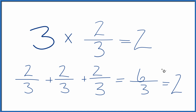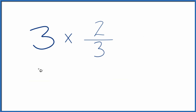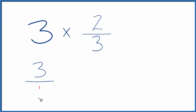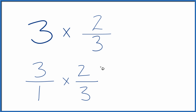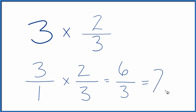Here's another way you could do it. You could think about the 3 as 3 over 1, because 3 divided by 1 is still 3, but now we have this fraction here. And then we could just multiply that times 2 thirds. When we multiply fractions, we multiply the numerators, then the denominators. 3 times 2 equals 6, and 1 times 3 equals 3. That gives us 6 thirds, which we know equals 2.